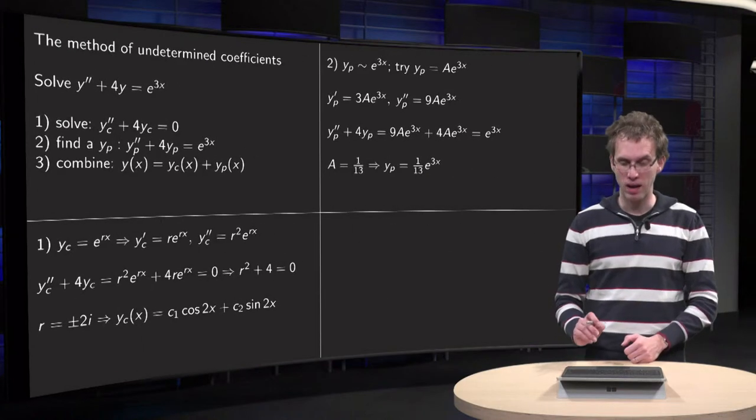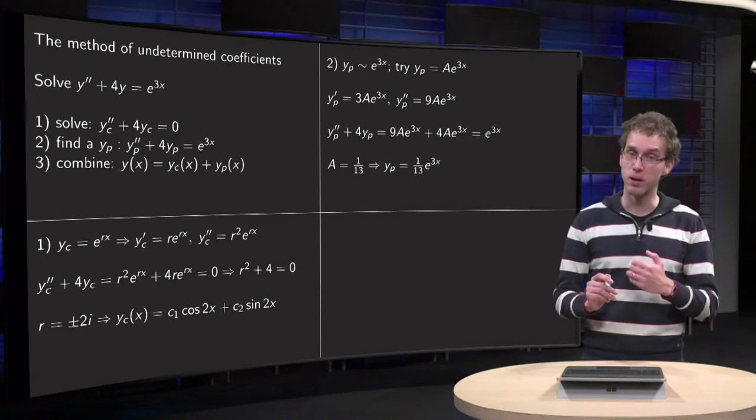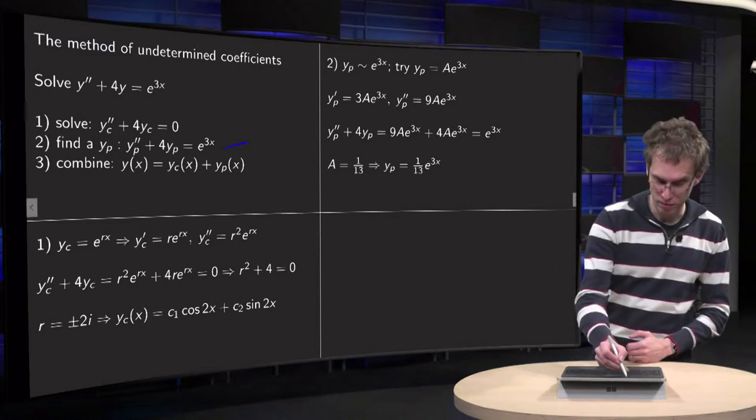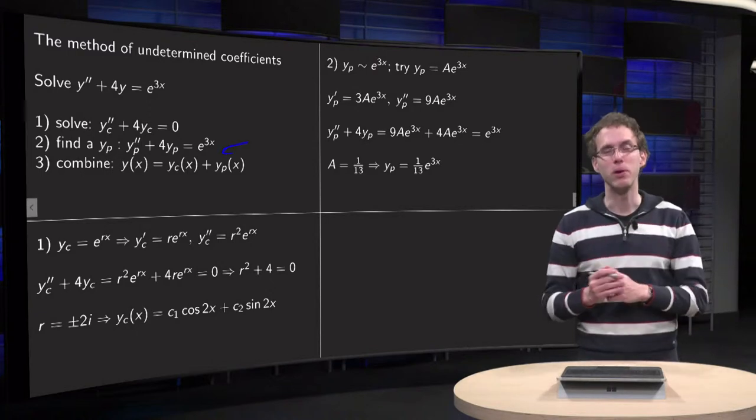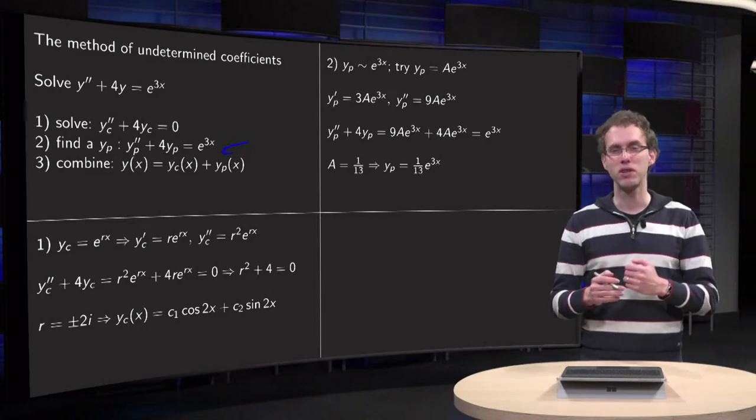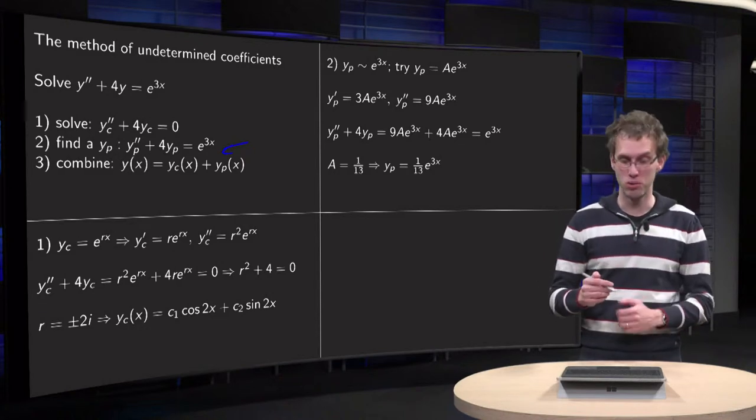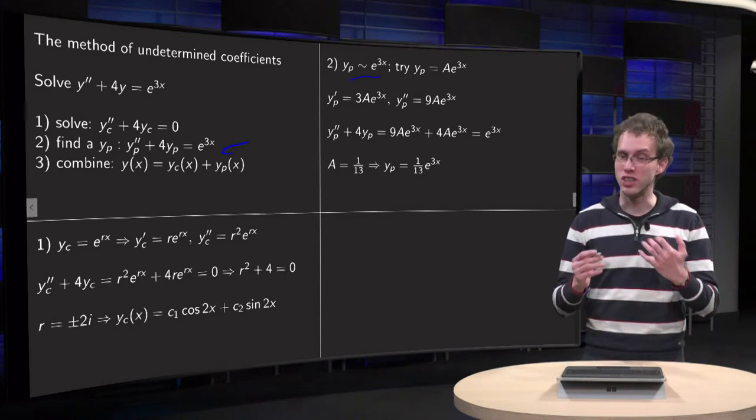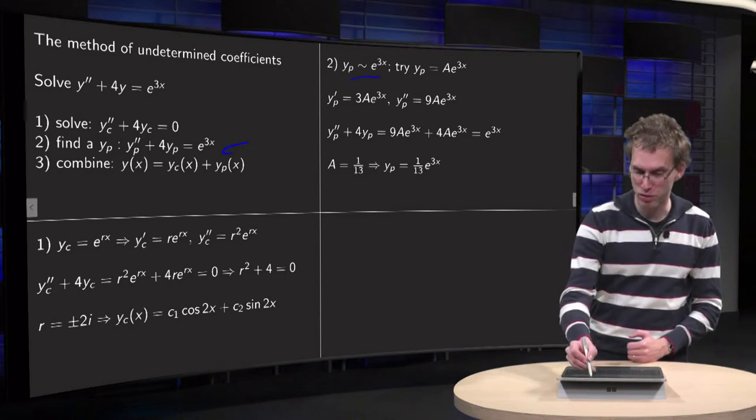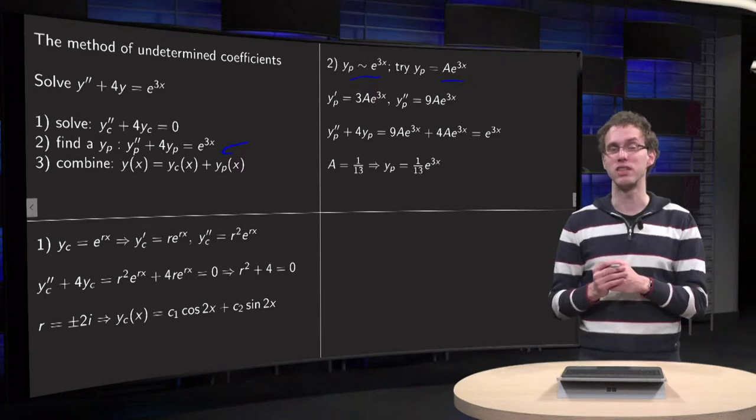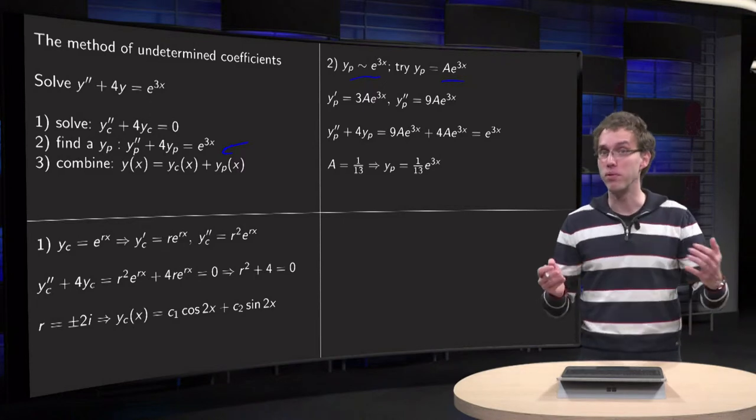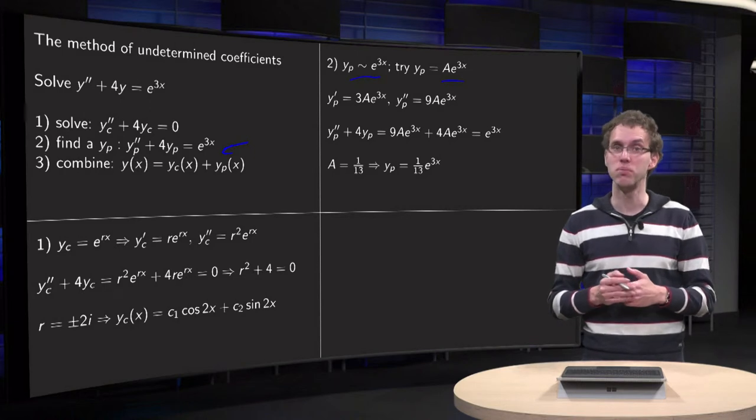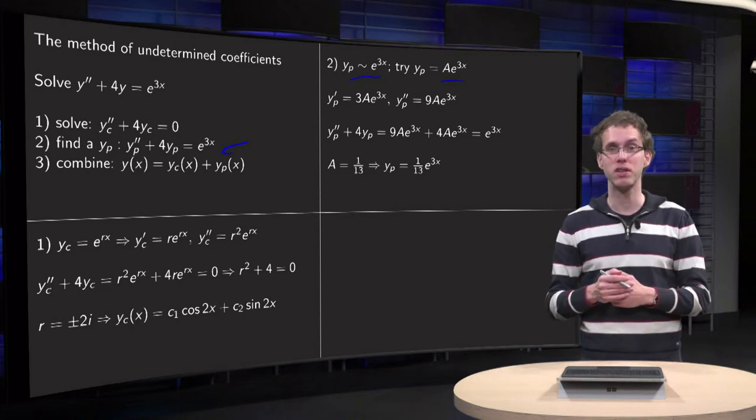But now, how do we solve the second problem here? How do we find a particular solution? Well, we look at the right side e^(3x) and we think, well, maybe the particular solution looks like e^(3x). So let's try a particular solution of the form A e^(3x). And maybe we will find a particular solution, maybe not, and then we have to try something else.